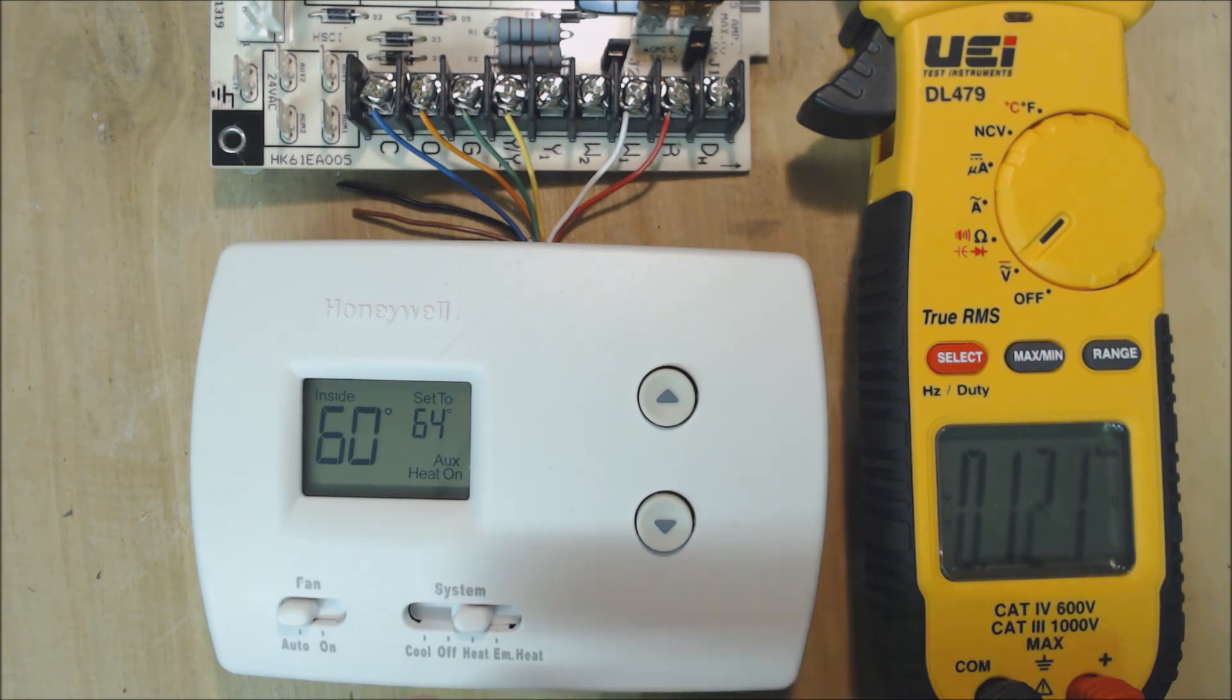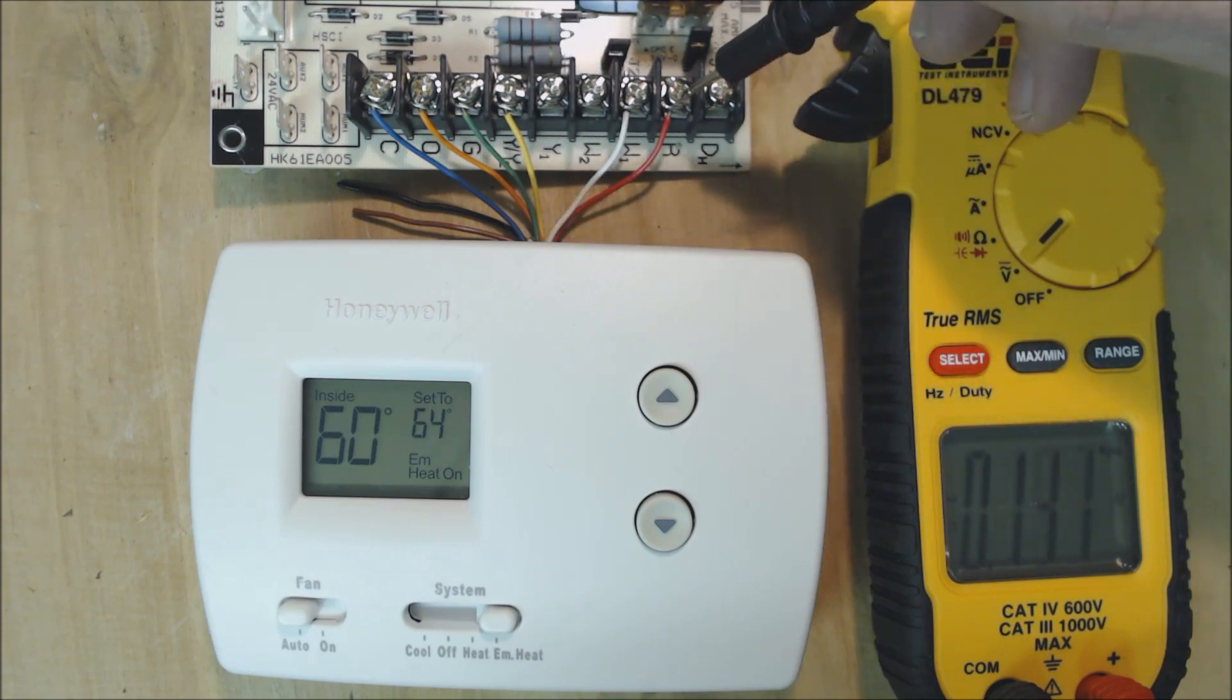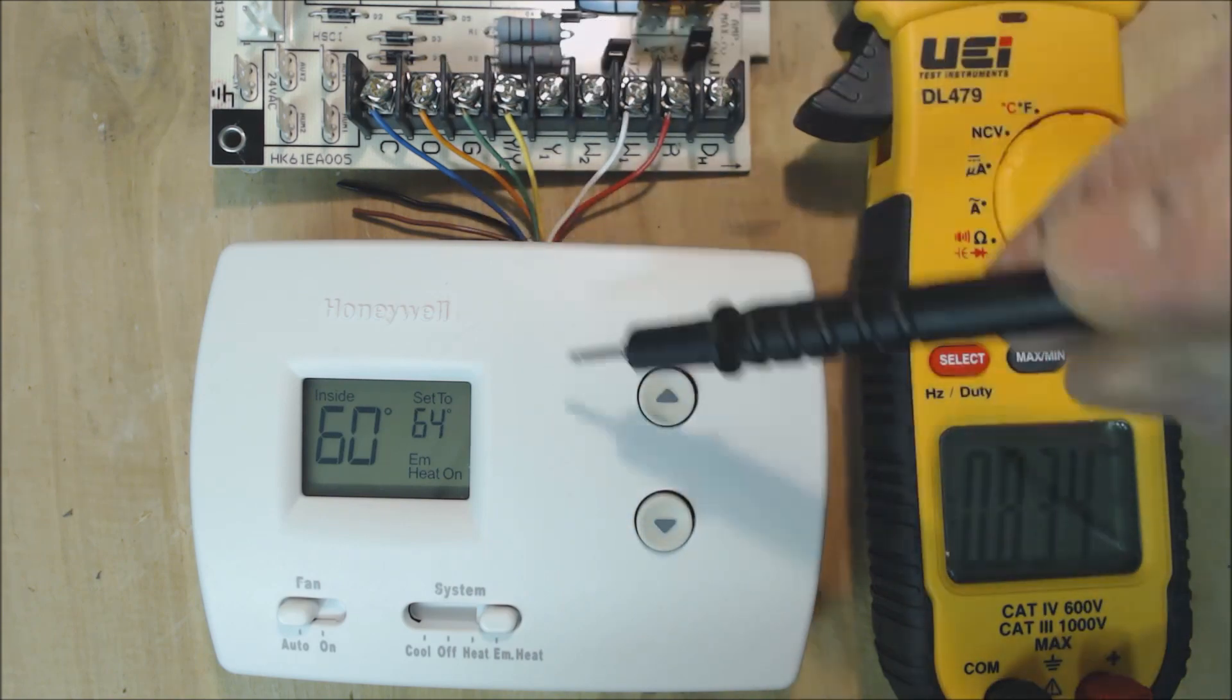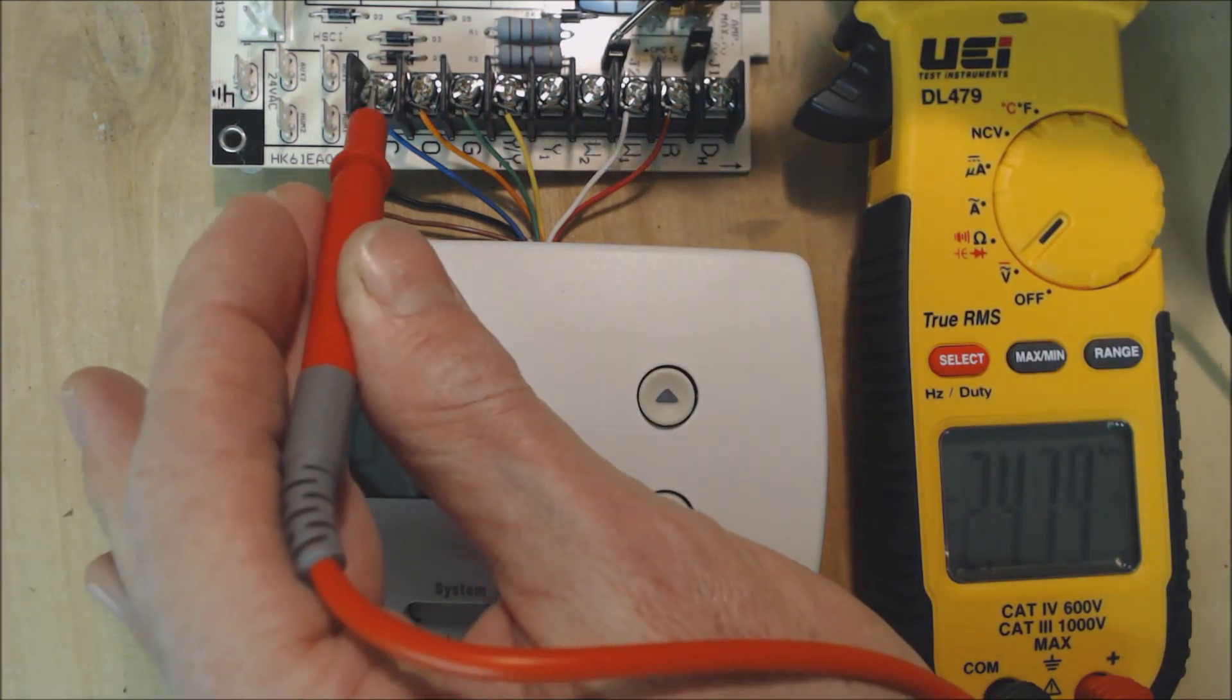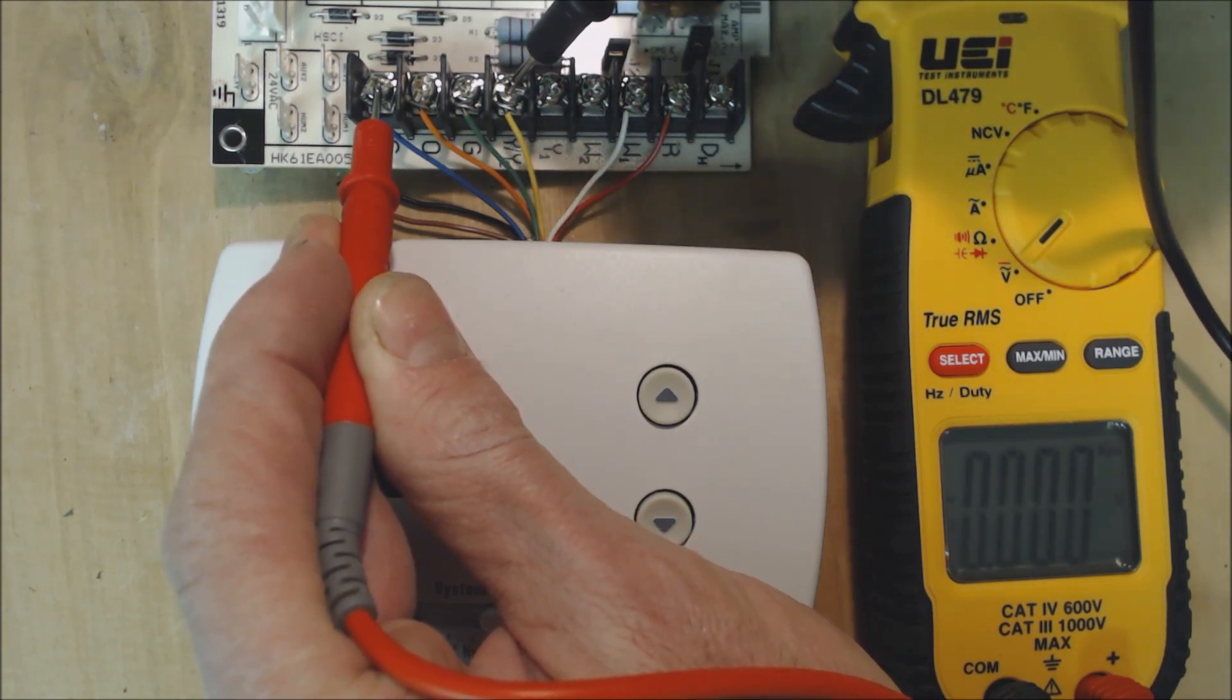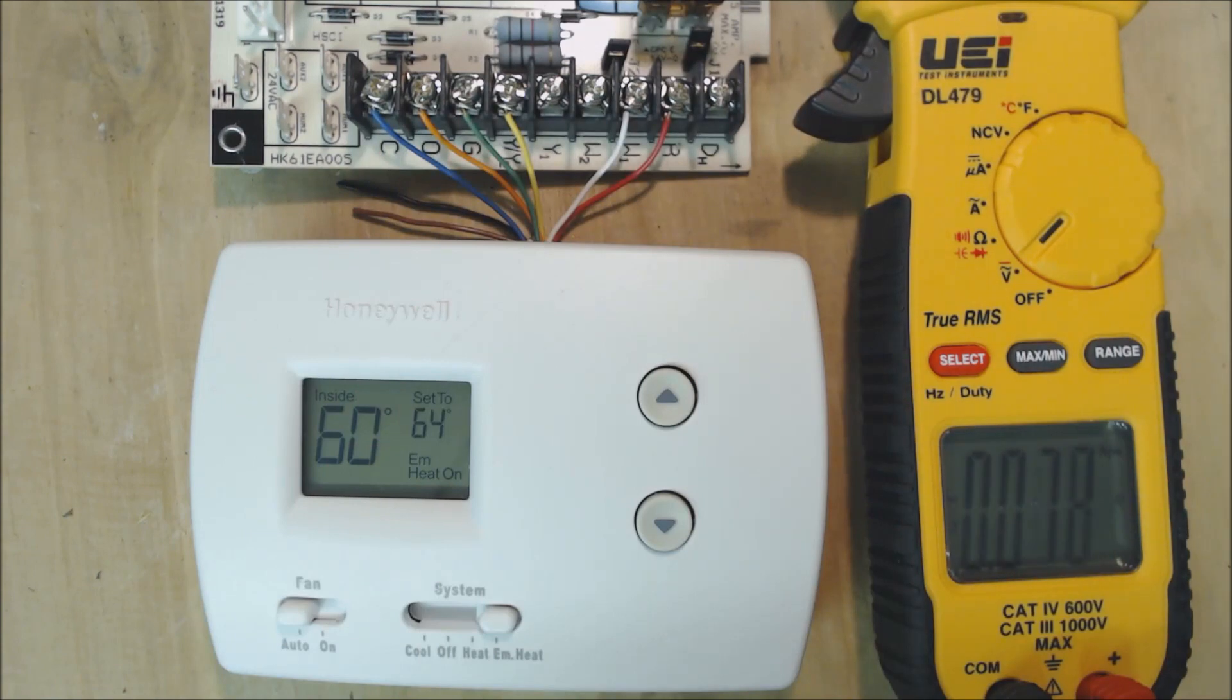Now we're going to turn on emergency heat. Now we should not have any power connecting to Y. Basically all that's happening now is R is coming into the thermostat, it's touching W and G, and it's coming back to G and W over here. We've got 28 volts there. We should not have any voltage on the Y because the compressor should not be running now, and we should have 28 volts once again on the G.